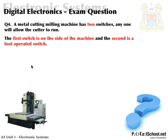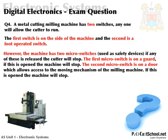It says: a metal cutting machine has two switches. Any one will allow the cutter to run. The first switch is on the side of the machine and the second is a foot-operated switch. Notice it says any one will allow the cutter to run. However, the machine has two micro switches used as safety devices. If any of these is released, the cutter will stop.